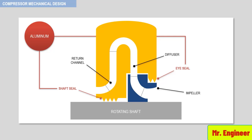Various abradable material interstage seals are also used. Abradable seals allow for contact with the rotor without causing excitation to the rotor system. This type of interstage sealing system had its origin in the aircraft engine industry. The advantage of an abradable seal is increased efficiency.